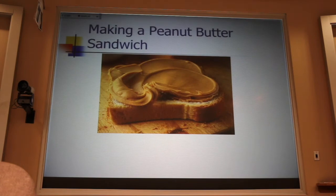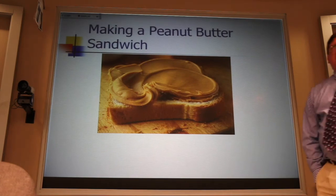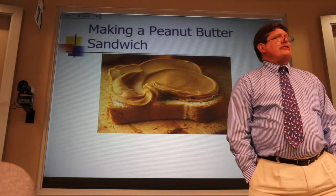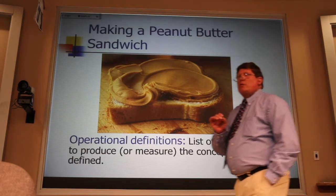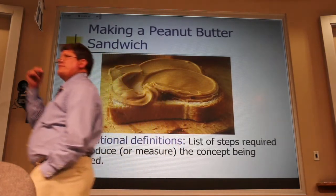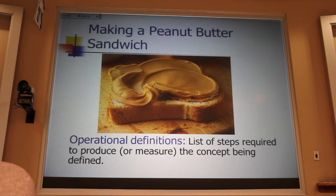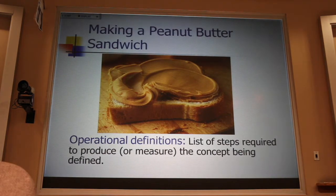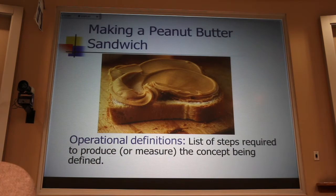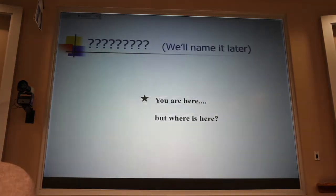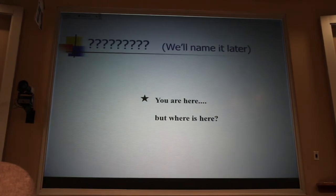Last day we used a peanut butter sandwich to talk about operational definitions in science. We decided that an operational definition was a recipe or a list of steps, a very specific list of steps that would allow us to create the thing we were defining or to measure the thing that we were defining. Now, we're going to use that idea of an operational definition to build some of our foundational ideas in kinematics.